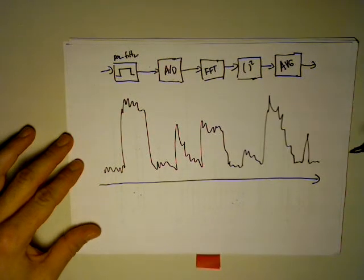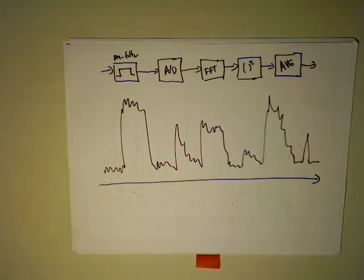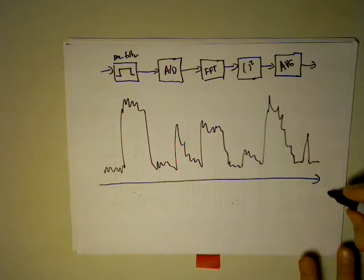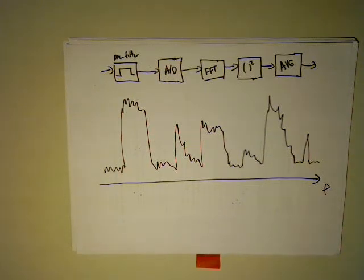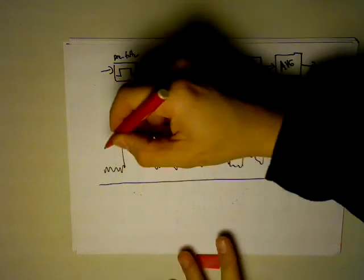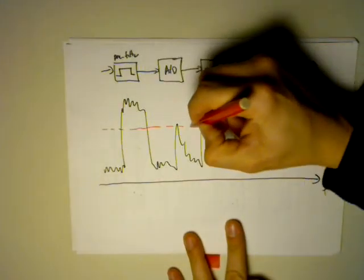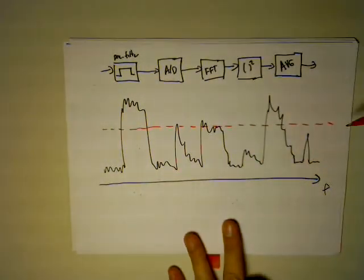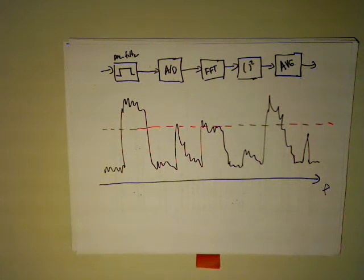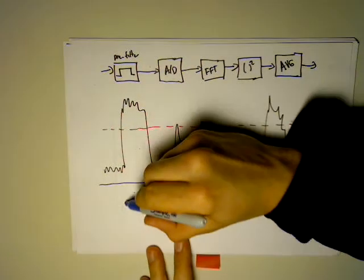So suppose that is our spectrum. And you might say, okay, where should you put the threshold? Well, if you choose the threshold here, right? Well, that's good. So let's say we call this tau. So we know that there is signal present here.